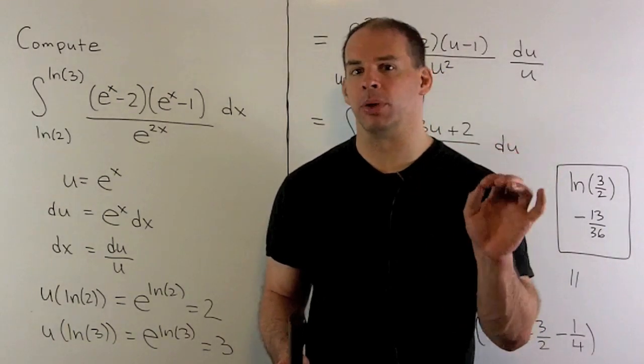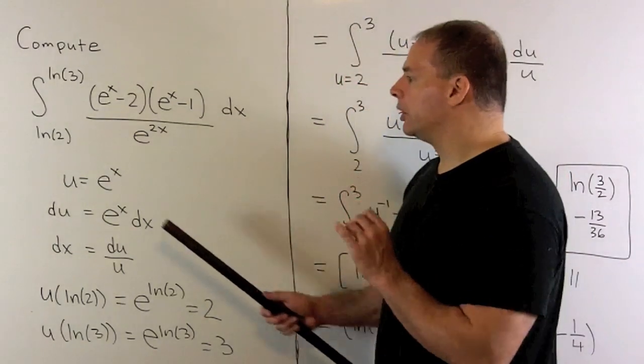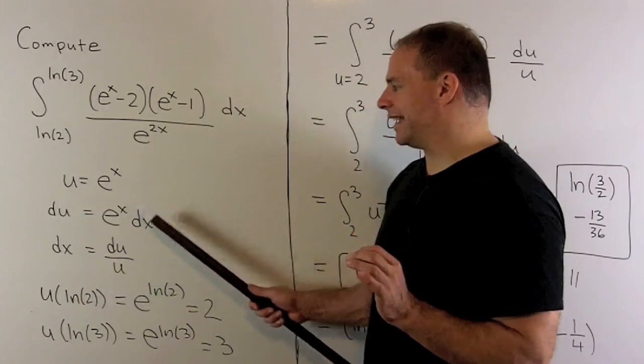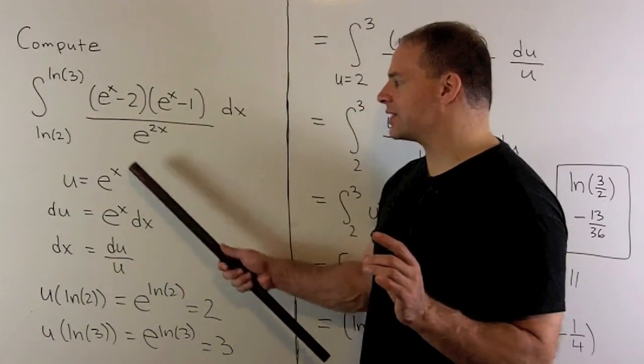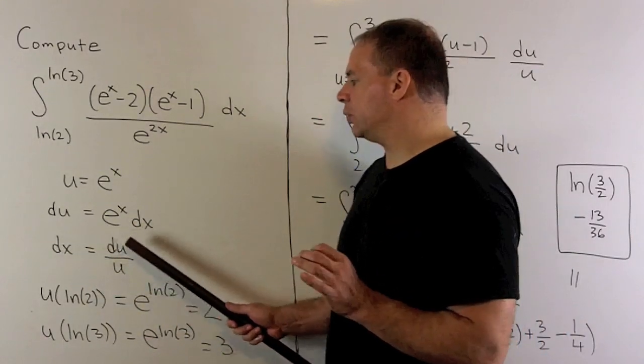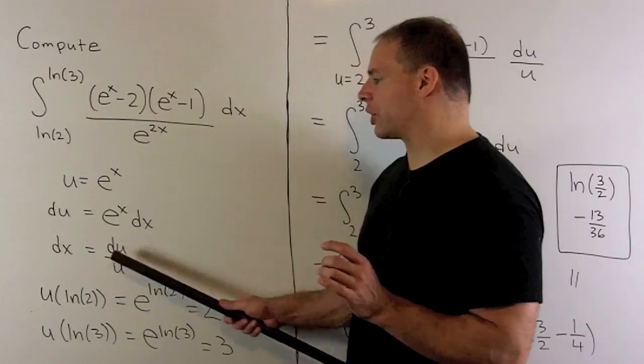If I put numbers in here, we compute e to the x first. So, u equals e to the x. Du is equal to e to the x dx. The derivative of e to the x is just itself. So I'll have dx equals du over e to the x. And then that e to the x down here, I could just call u.